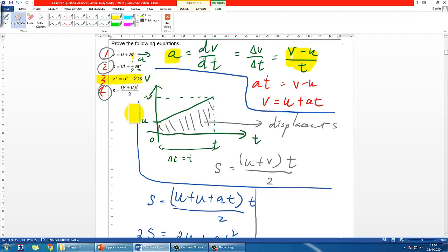For the last equation, number 3, it's probably the trickiest. But if you're observant, each equation has four variables. Equation 1 has V, U, A, T. Equation 2 has S, U, T, A. Equation 3 has V, U, A, S. Equation 4 has S, V, U, T. Each equation misses one variable: equation 1 has no S, equation 2 has no V, equation 3 has no T, equation 4 has no A. Since there are five variables total, we need to substitute away the missing variable. For equation 3, we substitute T away.